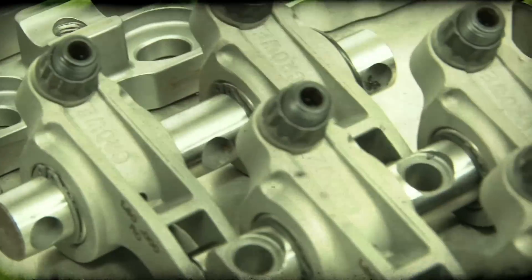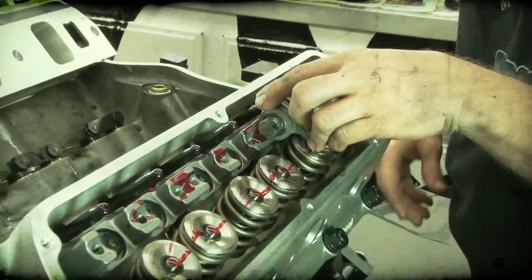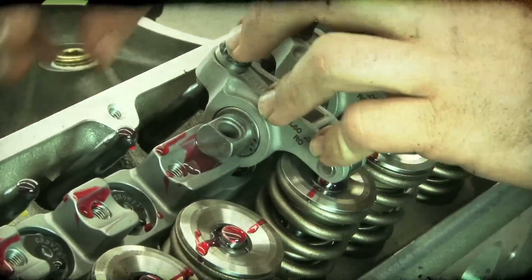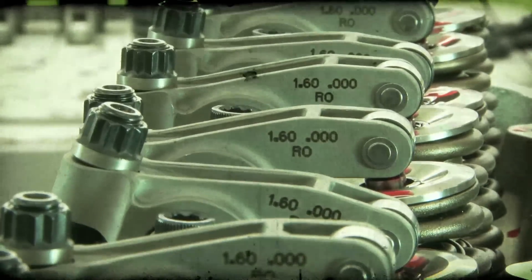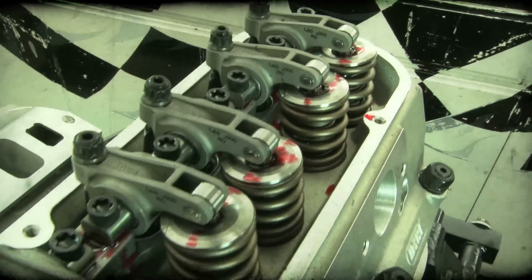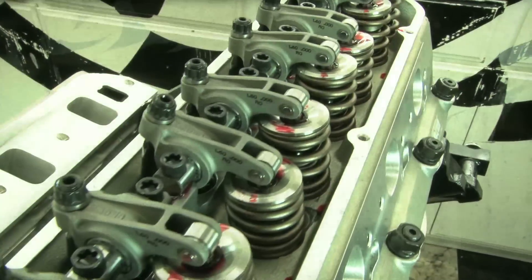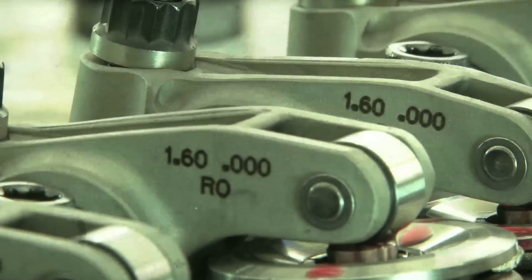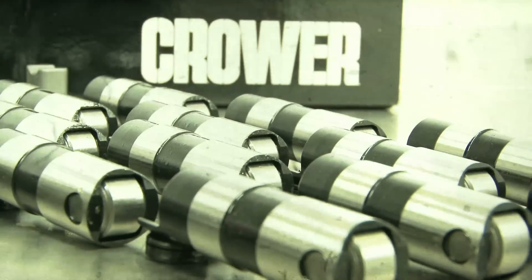Backing the Dart heads are a set of Crower's extreme-duty 1.6 ratio stainless steel shaft-mount rockers. The shaft-mount rockers heavily resist flex under load while keeping the rotating weight low onto the valve. The needle bearing tip option further reduces resistance and valve guide wear.